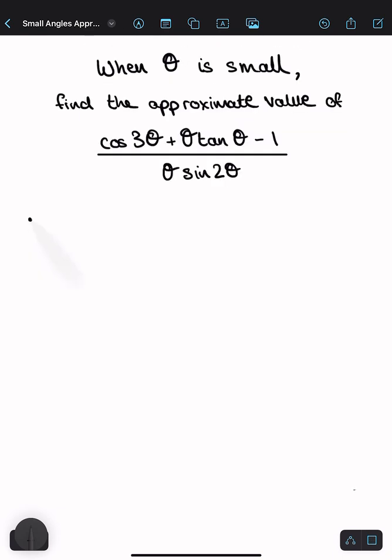So in your small angle approximation, you know that sine θ and tan θ approximate to θ, and cos θ approximates to 1 minus θ² over 2. And you can find these out by looking at the graphs of θ against sine and tan and the graph against cos θ.